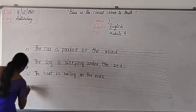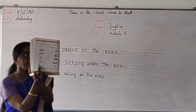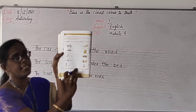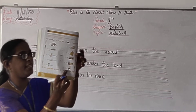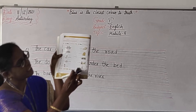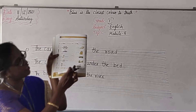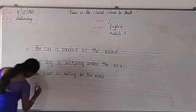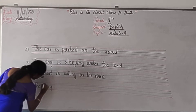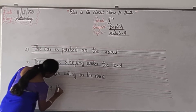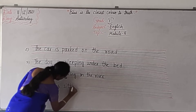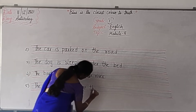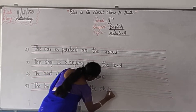This is the fifth one. What is the fifth picture? The boy. Correct. The boy is sitting. Where is the boy sitting? On the chair. The boy is sitting on the chair. Write down: The boy is sitting on the chair.